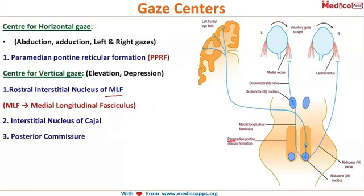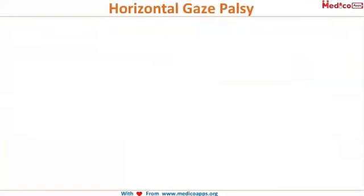Looking at this picture, this is the paramedian pontine reticular formation which controls the horizontal gaze, and this blue line here is your medial longitudinal fasciculus. We will revolve around these two in our discussion.